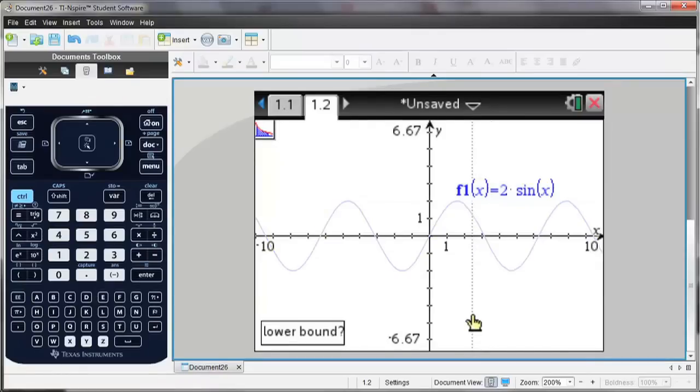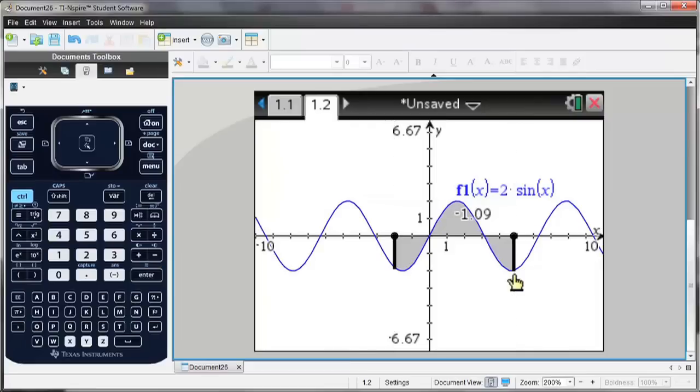So I can either type in my lower bound, or I can also drag using the mouse. Hit enter, and then this value, negative 1.09, that's the value of the integral between the two points.